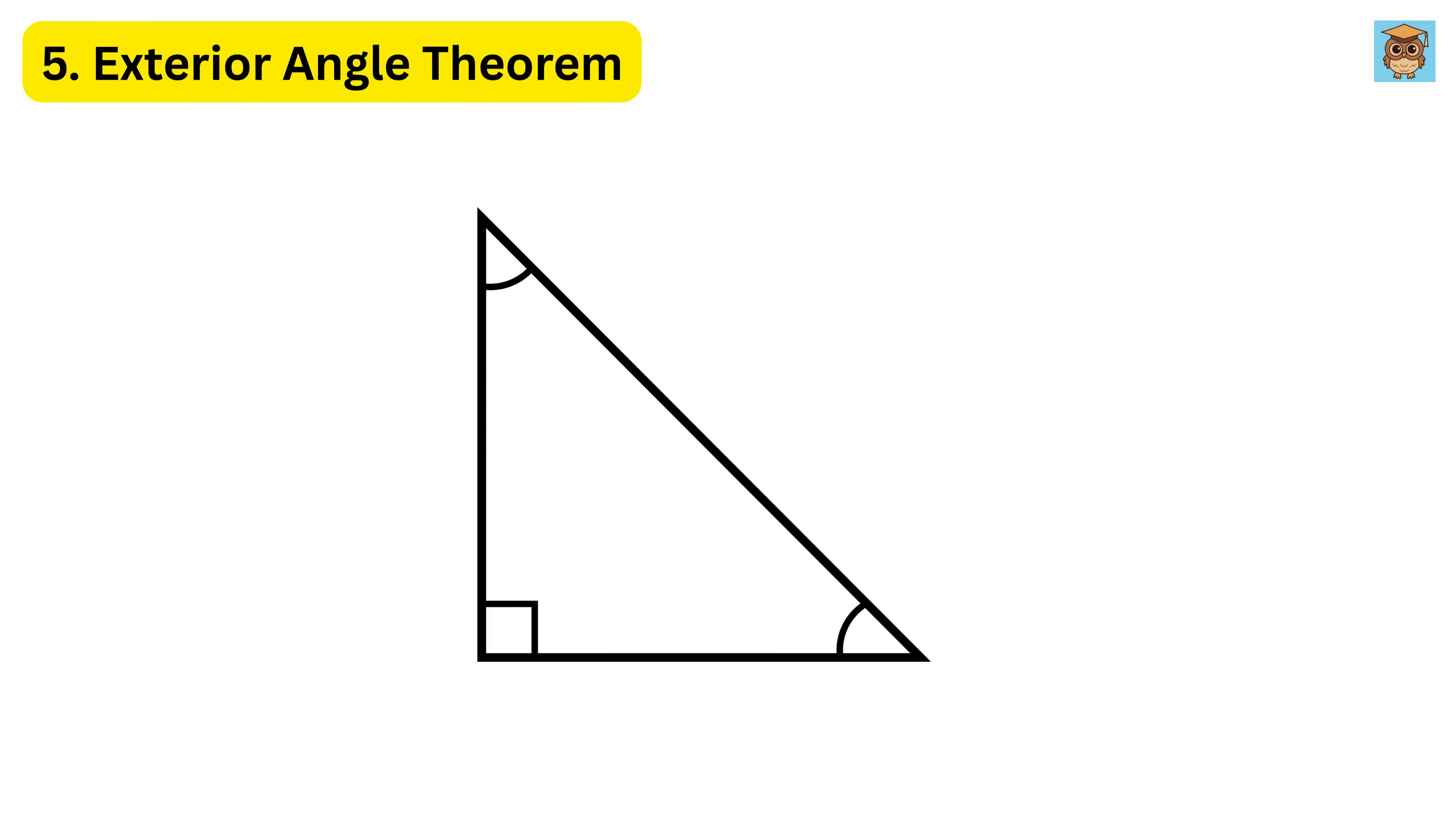For example, if your triangle has angles 30 degrees, 60 degrees, and 90 degrees, and you extend the side at 90 degrees, the exterior angle there is 30 plus 60, which is 90 degrees, which we can also visually observe.